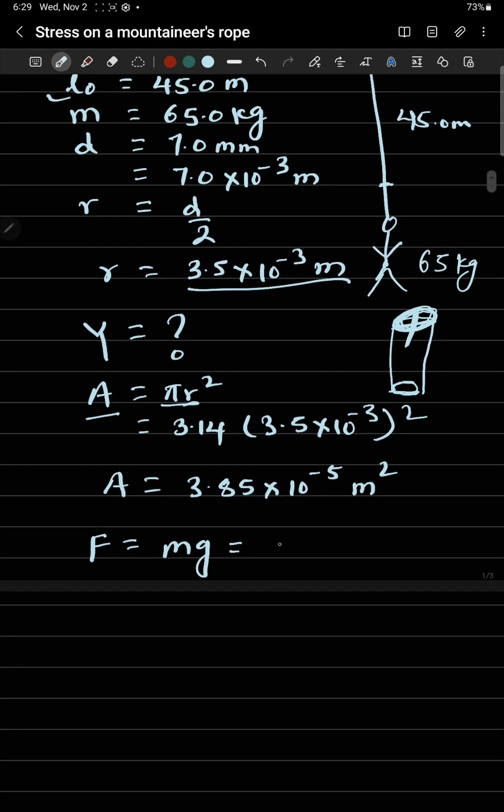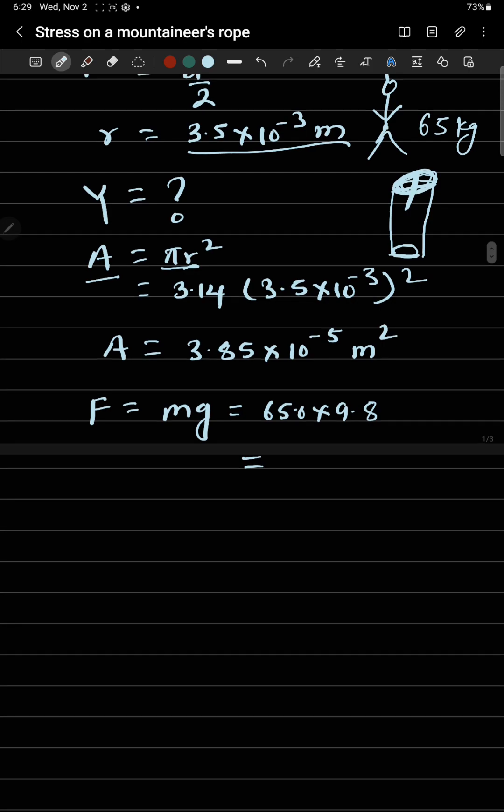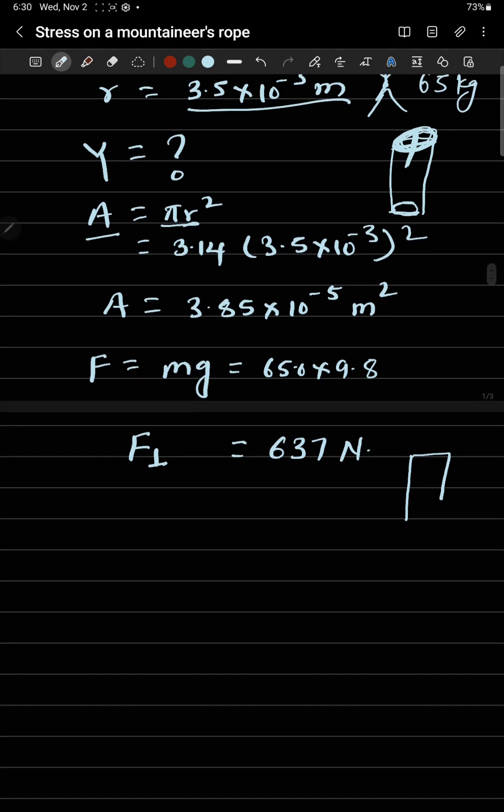If I calculate this value, which is 65.0 times 9.8, this is giving me 637 newtons. The mass of the climber hanging on the string multiplied by gravity gives you the weight.